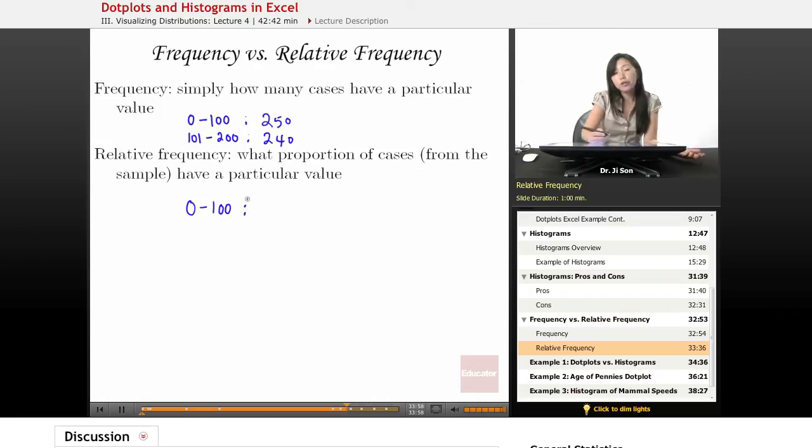Well, if your n is 1,000 people in your sample, then it would be 25% or 0.25.